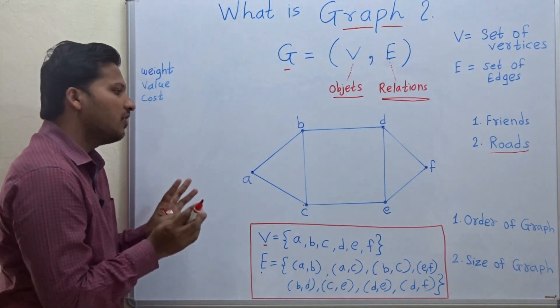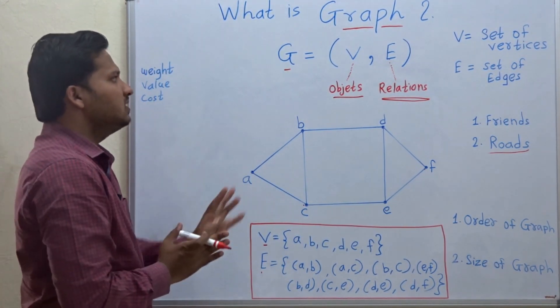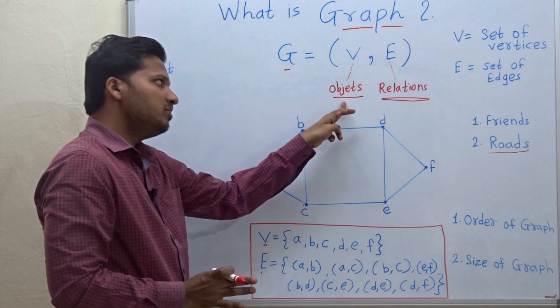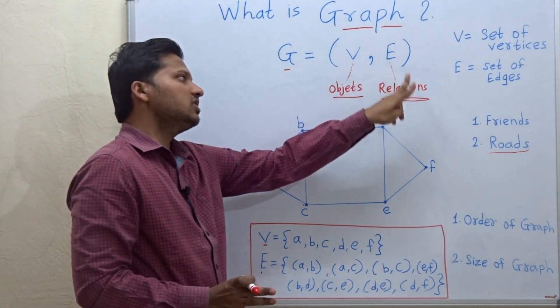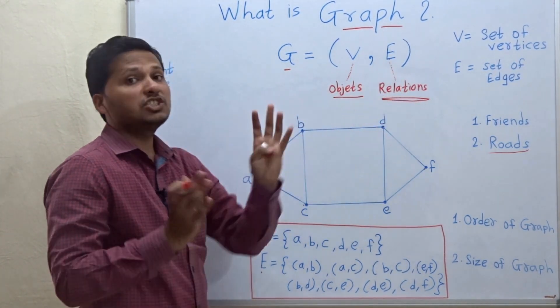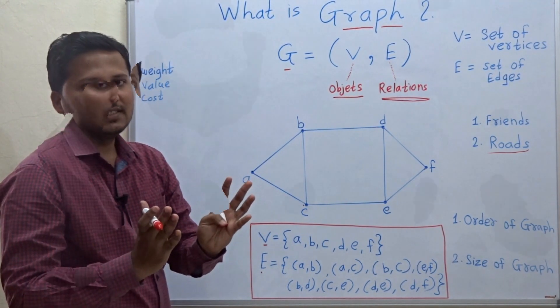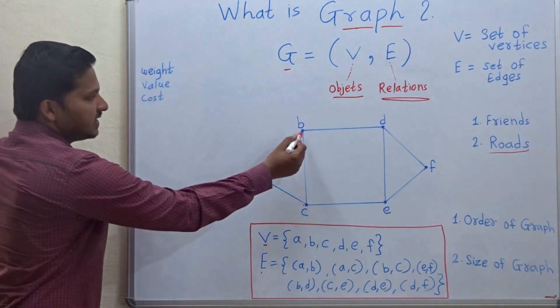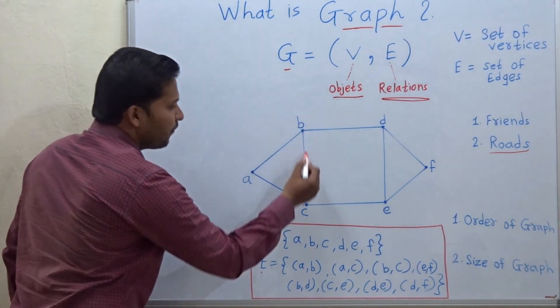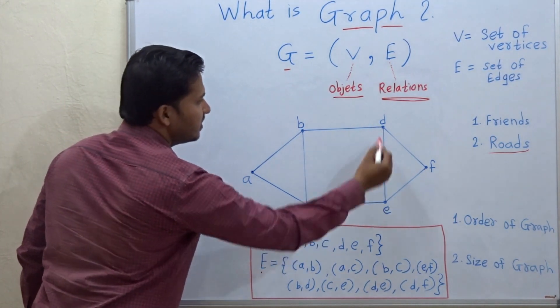So this is the meaning of graph in the real world: the vertices are the objects and the edges indicate the relation between those vertices. So now these edges can also have some values associated with them.